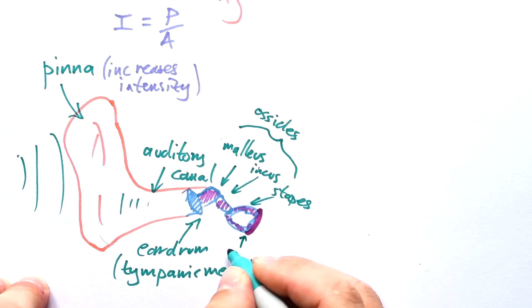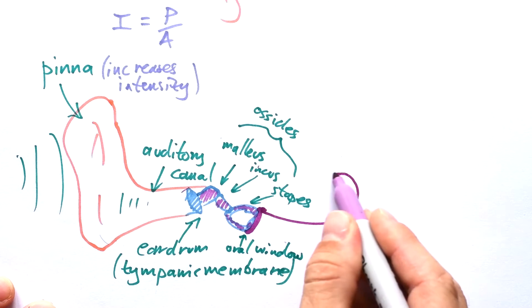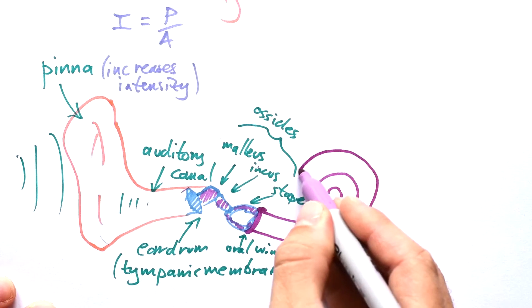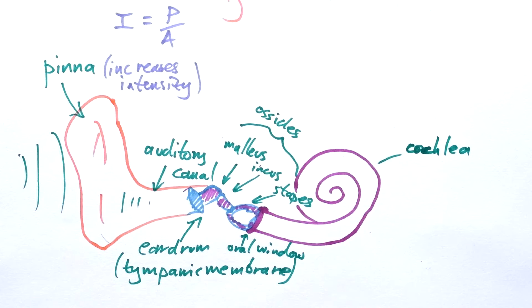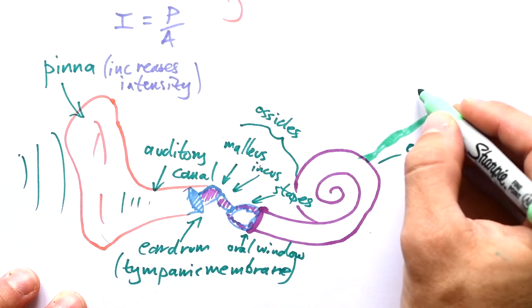We have a little window, we call it the oval window, because there is another window which is the circular window as well. That window is the window to the cochlea, the spirally bit where the magic happens. That's C-O-C-H-L-E-A. And we have nerves that come off there to take the information to the brain.